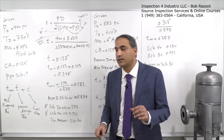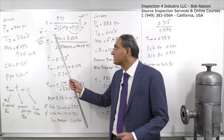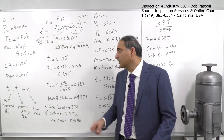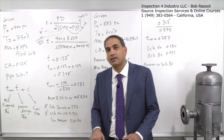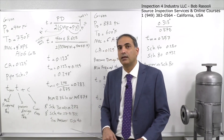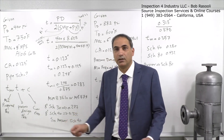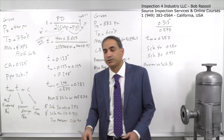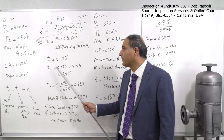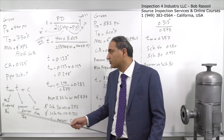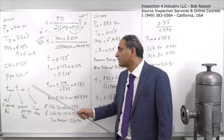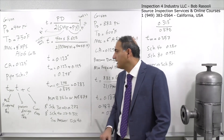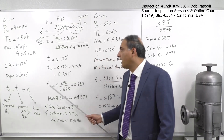This means we need 0.123 inches of wall thickness — with this material and allowable stress — to resist the internal pressure. If the problem only asked for the pressure design thickness, we would stop here. But since the problem asks for the pipe schedule, we must add the corrosion allowance. Adding 0.125 inches gives us 0.248 inches.